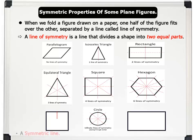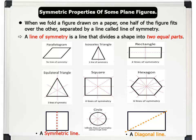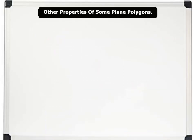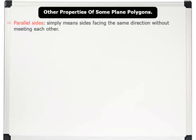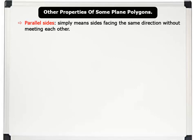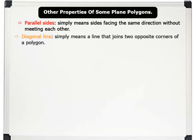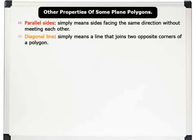Note that while a line of symmetry divides the shape into two equal parts, a diagonal line connects one corner of a shape to the other. A diagonal line can sometimes act as a line of symmetry. Before we continue, let's take note of the following words: 1. Parallel sides — this simply means sides facing the same direction without meeting each other. 2. Diagonal line — this simply means a line that joins two opposite corners of the polygon.